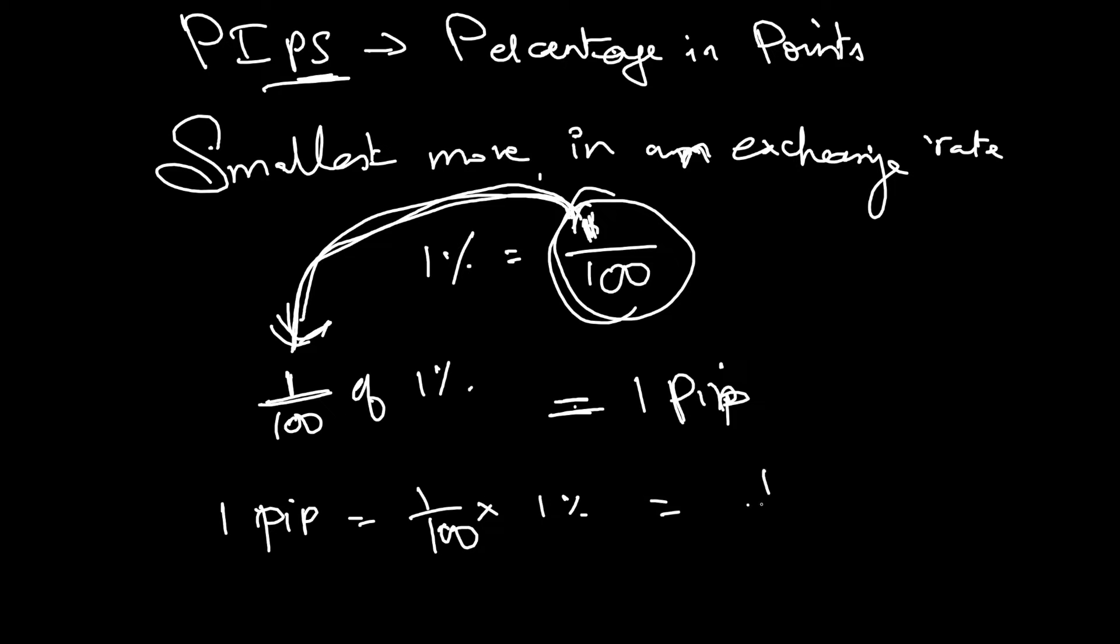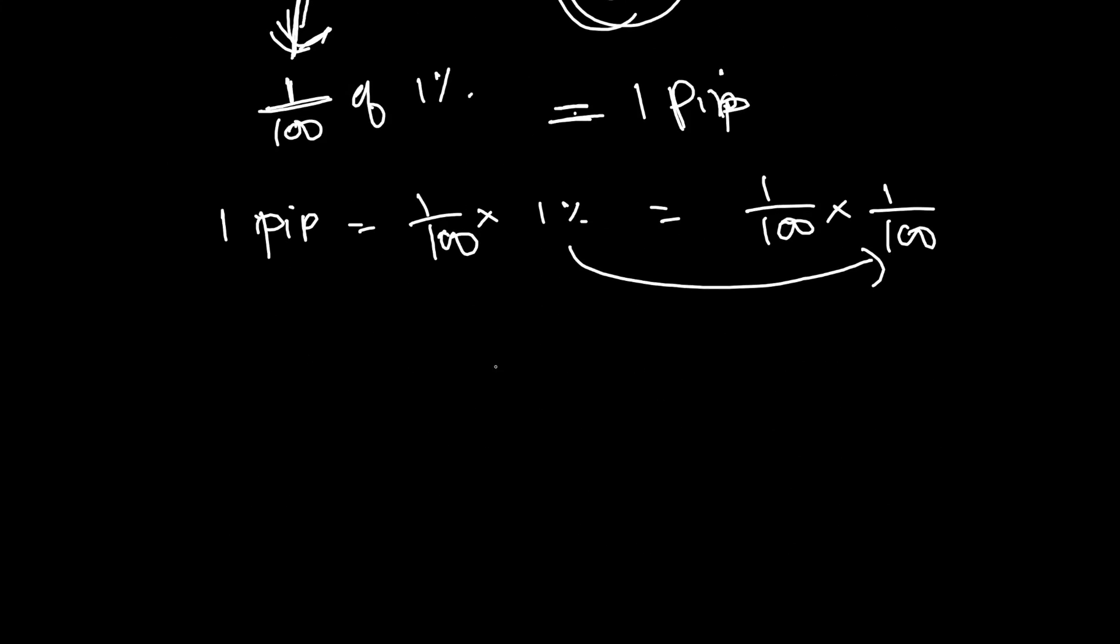Because this 1 percentage becomes 1 by 100 again. So, that means 1 PIP is equal to 1 by 100 and then 100 into 100. So, it becomes 1 by 10,000. So, that is 1 PIP.